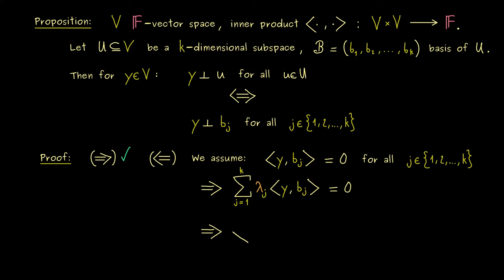This means, we just pull in the scalars and the sum. And there we get, that every linear combination with the basis vectors combined with y in the inner product gives us 0. And since we have a basis here, we know that every u in U has such a linear combination representation. Therefore, we have exactly shown what we wanted.